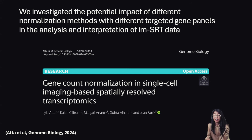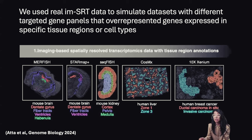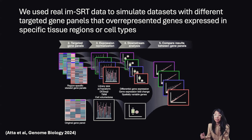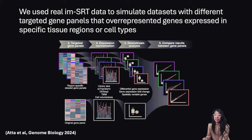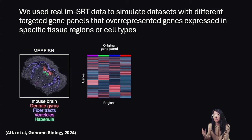Briefly, we use real imaging-based spatially resolved transcriptomic datasets to simulate different 100-gene targeted gene panels, some of which are skewed to over-represent genes expressed in specific tissue regions or cell types. Given these datasets with different gene panels, we apply various normalization methods and perform various downstream analyses, such as differential expression, gene fold change, and spatially variable gene analysis, then compare the results to what we found when we performed the analysis using the full, more-representative gene panel. As one example, consider this MERFISH imaging-based spatially resolved transcriptomics dataset.